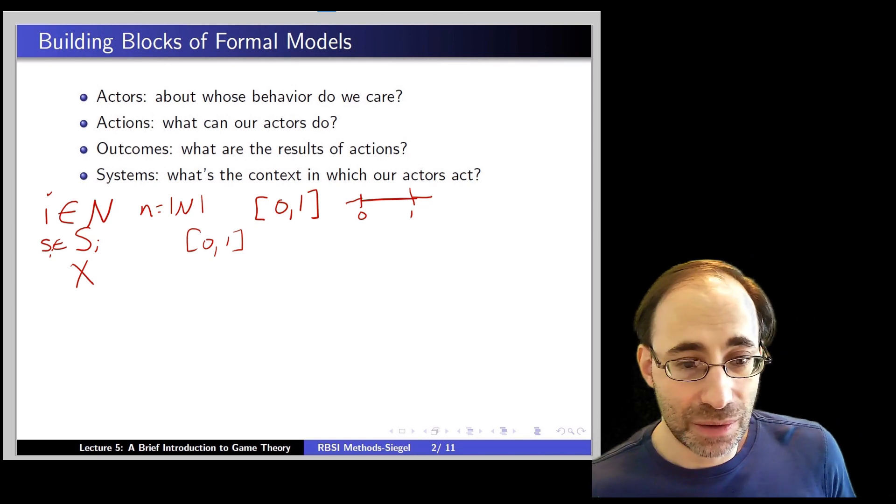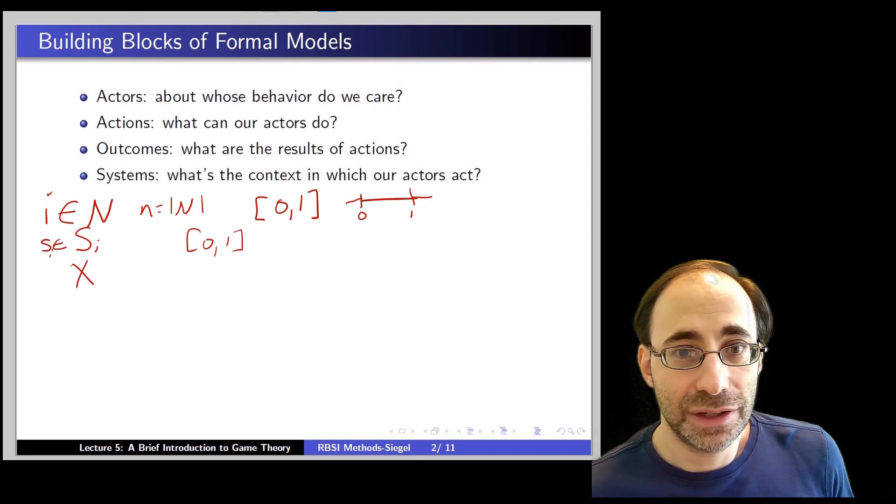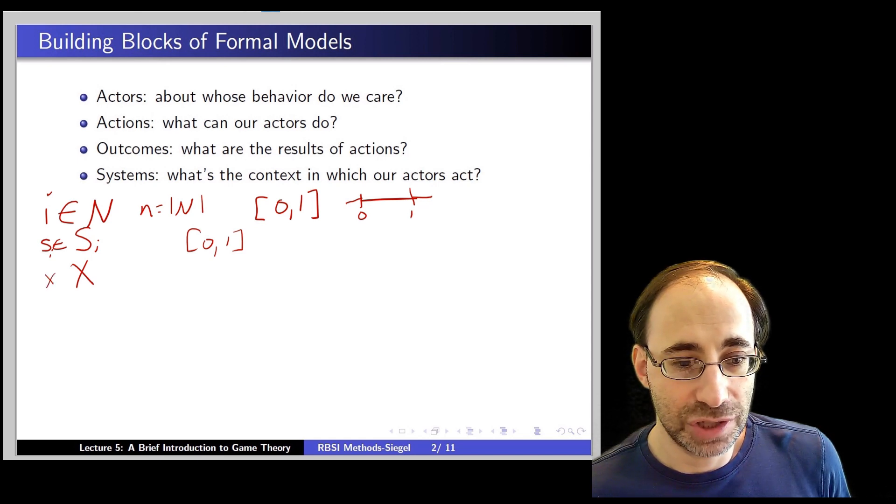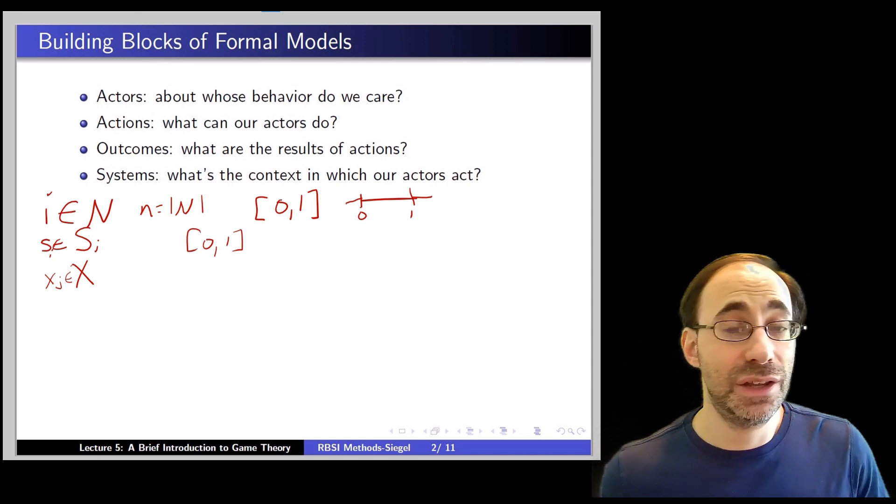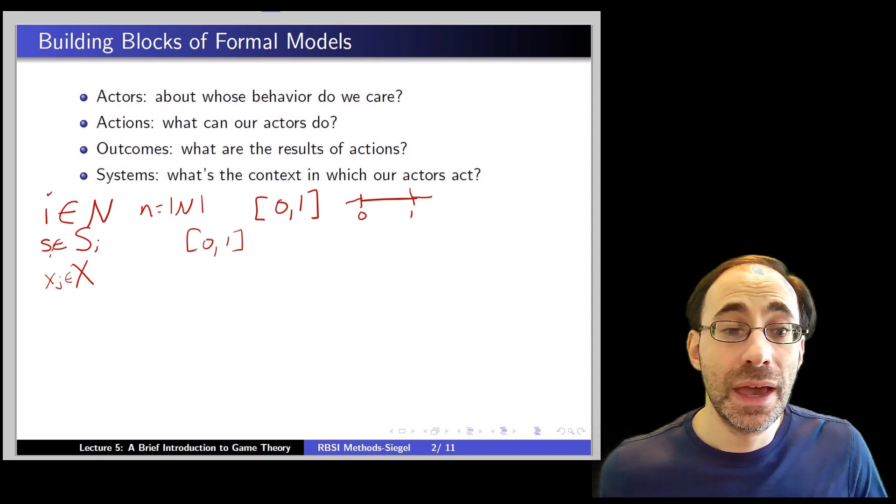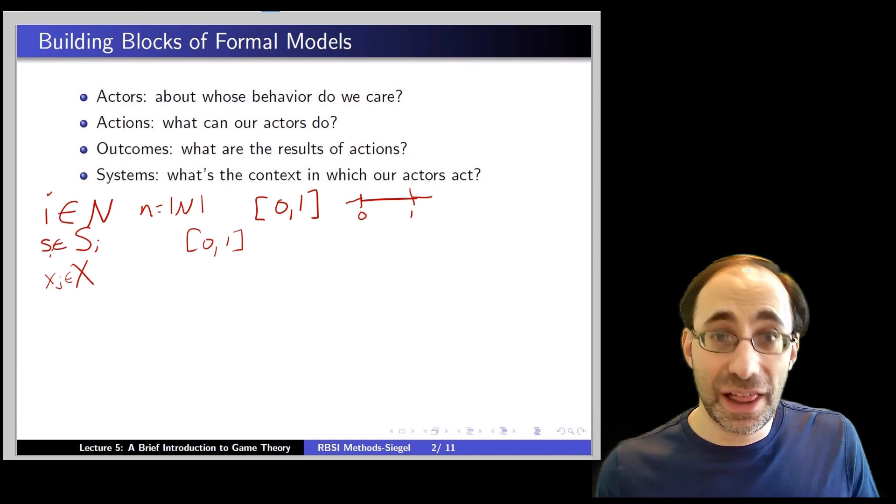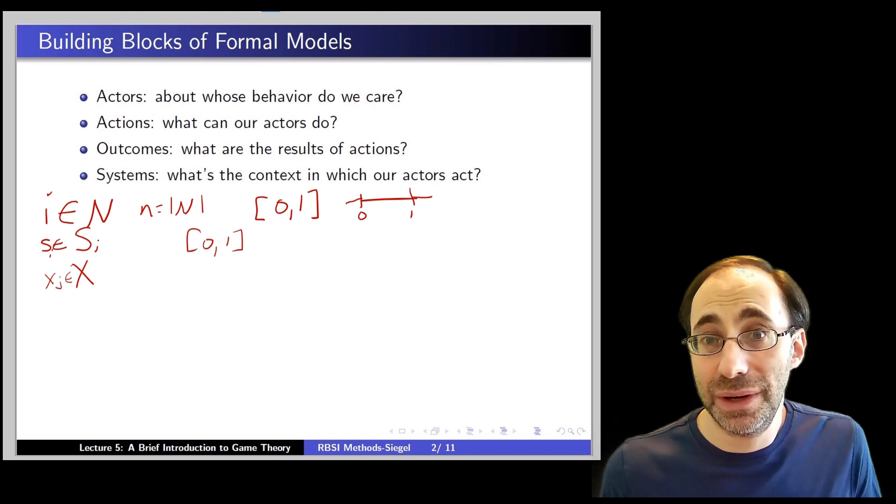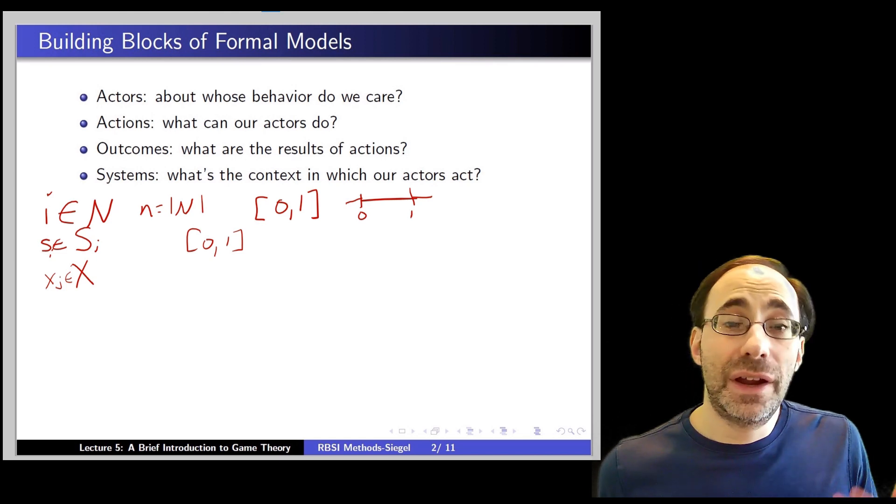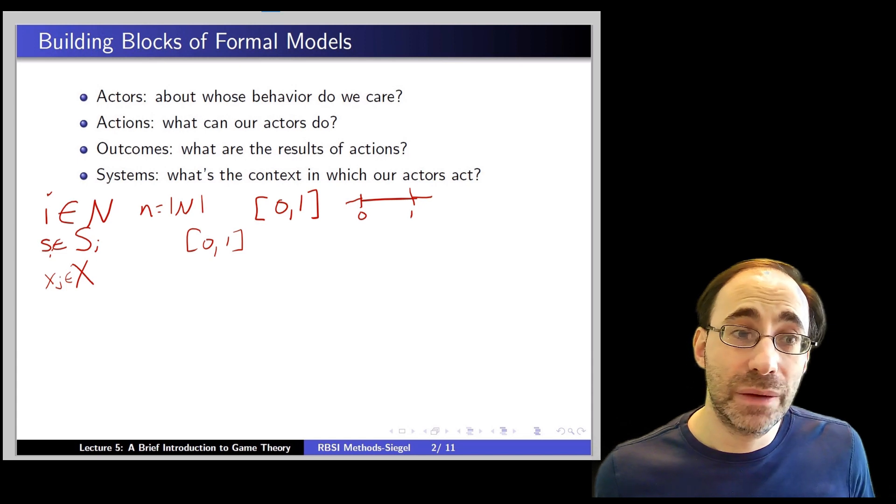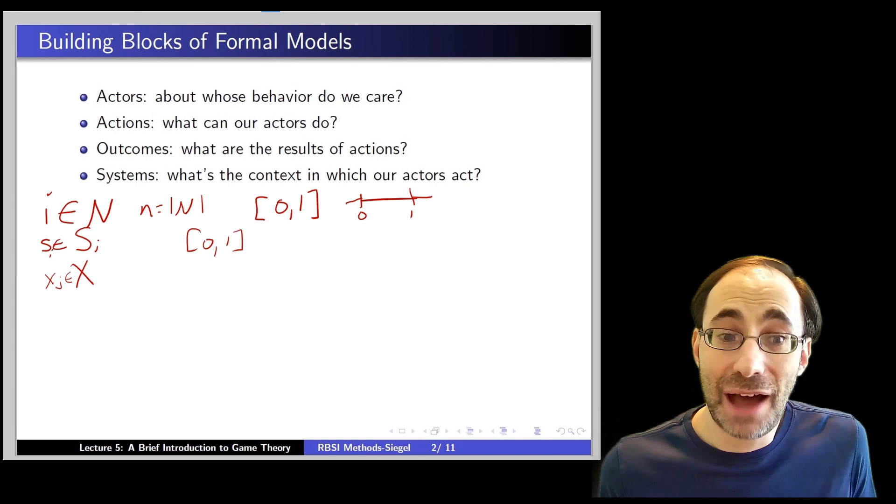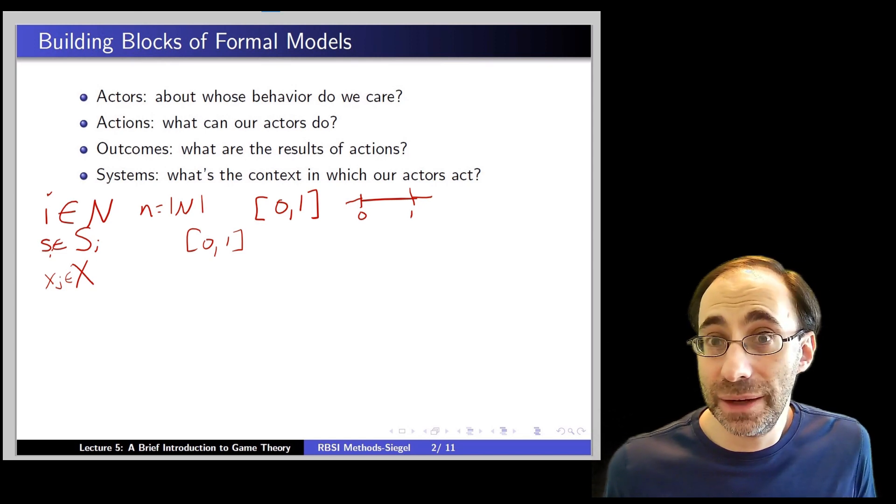It can be discrete, in which case we might write that we have some x sub j which is an element of x, in which case what we're saying is that there's some outcome space X. And each little x sub j is just an element of X and we're saying X is discrete so there's only a certain number of discrete outcomes that can happen. In a lot of the games we'll see that's the case. We can get certain payoffs that be 0, 1, 2, or 3 say and you only have four possible outcomes which you get a payoff of 0, 1, 2, or 3.